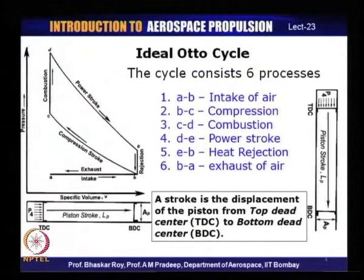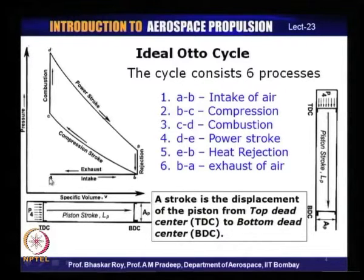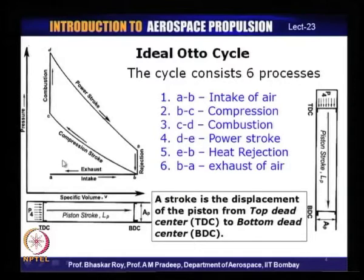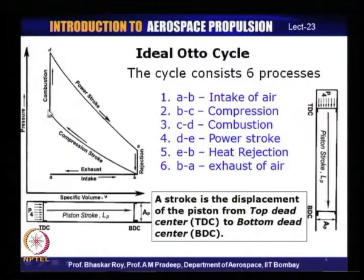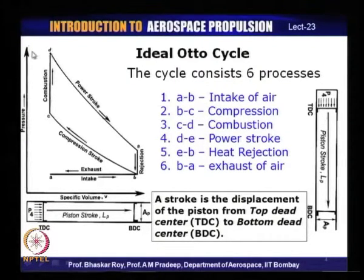Let us look at what is known as the ideal Otto cycle. The cycle essentially consists of six processes. It starts from a point we may call A, from which we have what we'll call the intake of air, going from A to B. The process A to B is called the intake of air — the air is taken into the system. From B to C, this air is now compressed; this is called the compression process, and it goes to a higher pressure as you can see in the P-V diagram. Then from C, you have burning of fuel — this is the combustion process. In the process of burning fuel, this compressed air is raised in temperature to a higher level, and as per the laws of thermodynamics, when you raise the temperature, the pressure also goes up. So it goes to higher pressure at D.